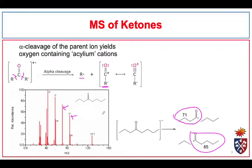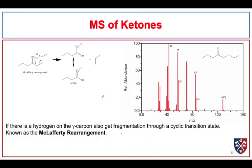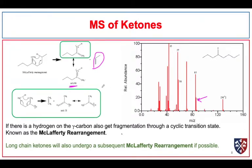A couple of other things to look for in ketone mass spectra: if we have a long-chain ketone with a hydrogen on the gamma carbon, we can form a cyclic transition state that allows for a McLafferty rearrangement, splitting off a neutral alkene molecule while the remaining species is charged. In this case the rearrangement splits off a small alkene and we get a mass-to-charge ratio of 86. If there is a long chain on both sides, we can get another McLafferty-type rearrangement splitting off ethylene, and what remains has a mass-to-charge ratio of 58.